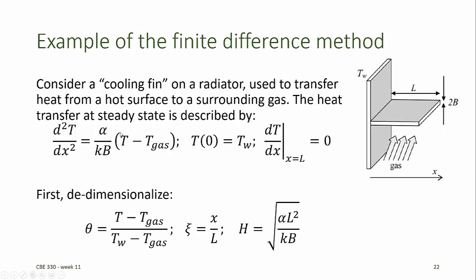We use a functional form representing Newton's law of cooling to describe the heat loss to the surroundings, where alpha, k, and b are parameters—alpha being a heat transfer coefficient, k being a thermal conductivity, and b being the half thickness of the fin.